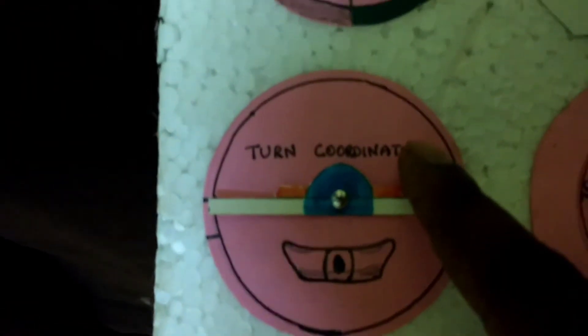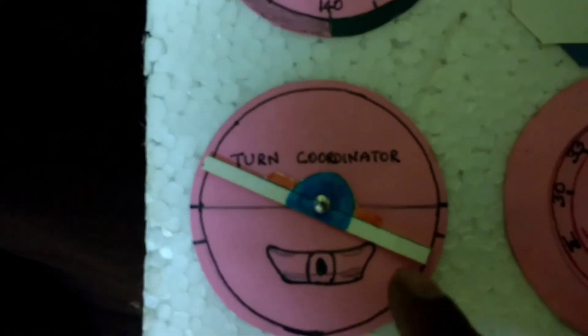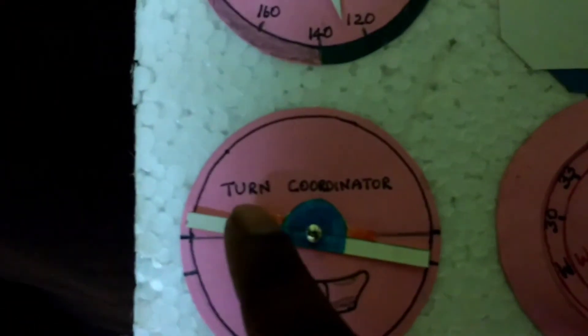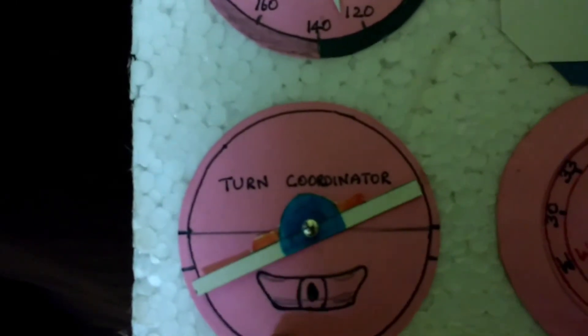The next instrument is the turn coordinator, where you can see the rate at which the aircraft banks to the left or right, or level.